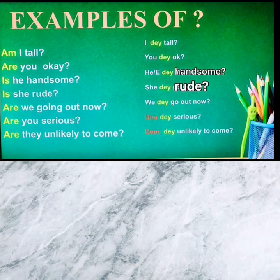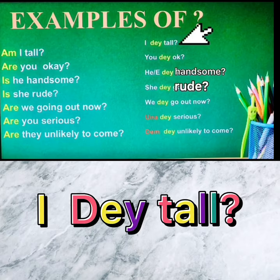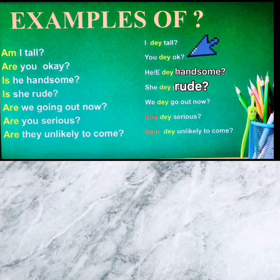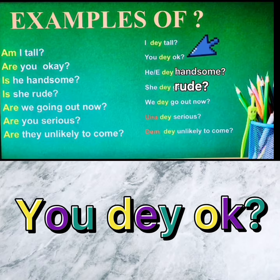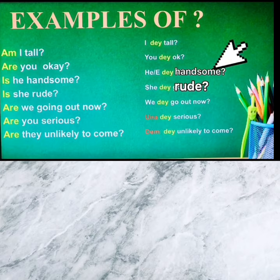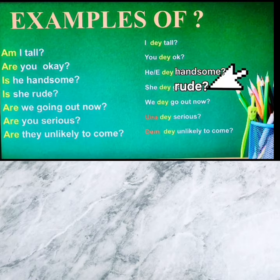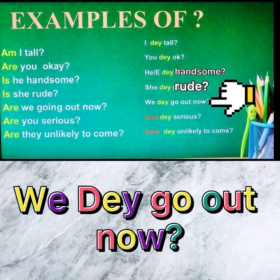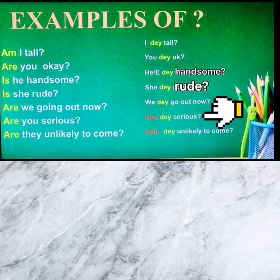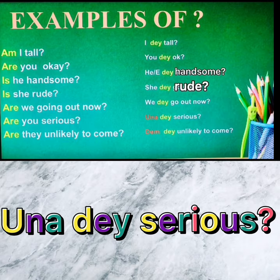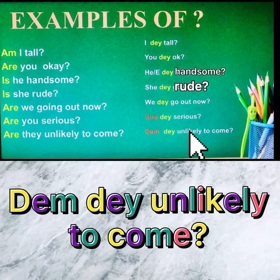Let's look at the following examples. 'Am I tall?' 'Are they tall?' 'Are you okay?' — 'you dee okay?' 'Is he handsome?' 'Is she rude?' 'Are we going out now?' 'Are you serious?' — 'una dee serious?' 'Are they unlikely to come?' — 'den dee unlikely to come?'